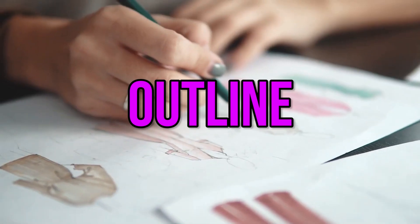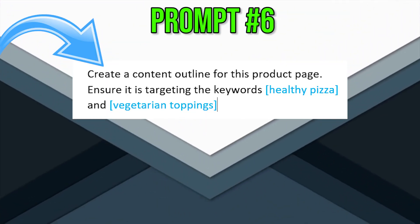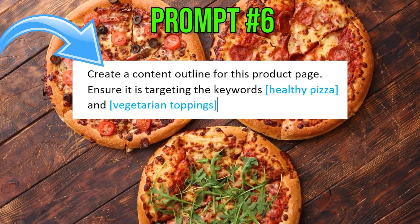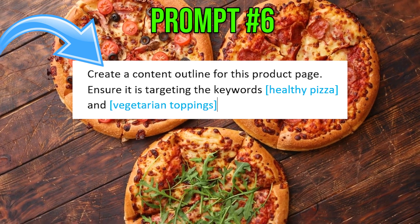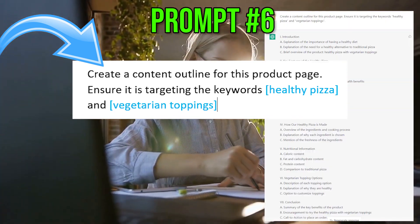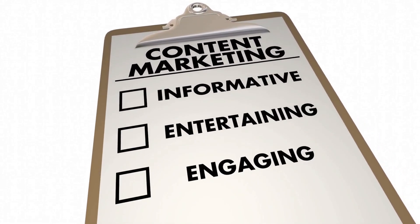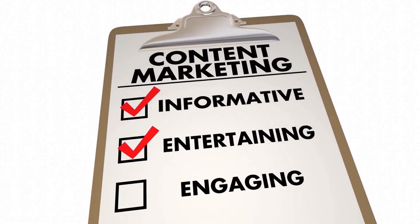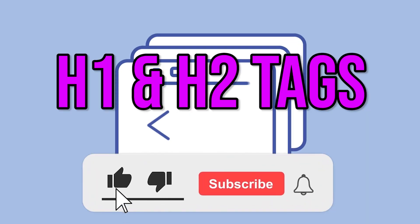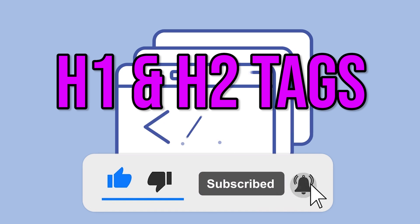Now let's do an outline. Use this prompt: 'Create a content outline for this product page. Ensure it is targeting the keywords healthy pizza and vegetarian toppings.' Your outline is now done. This will help you structure your content on the page so it flows and provides tons of value for the reader. Let's now add some H2 and H3 tags, which are like subheadlines to the main headline.